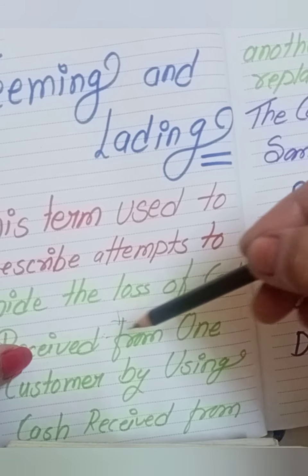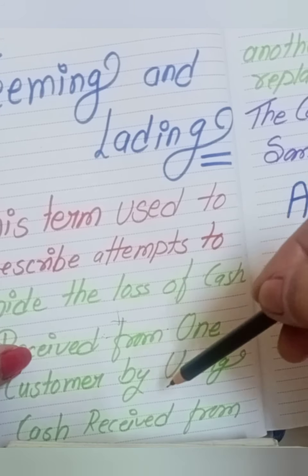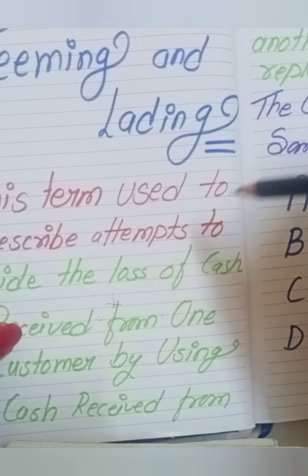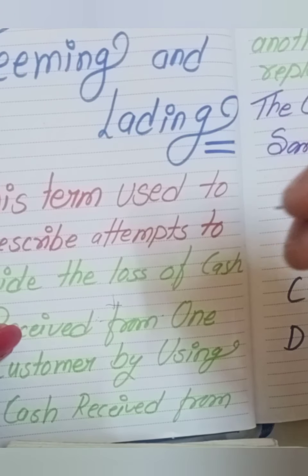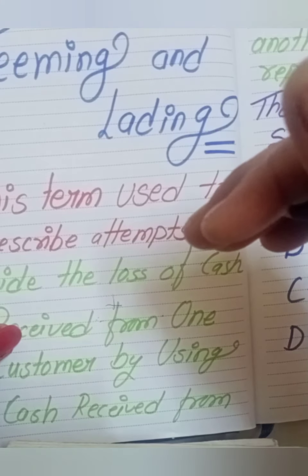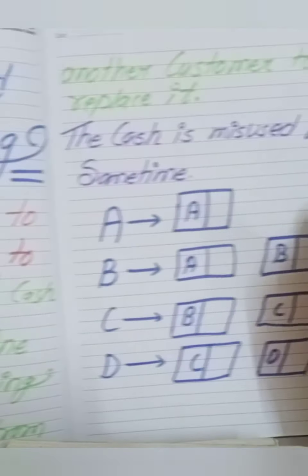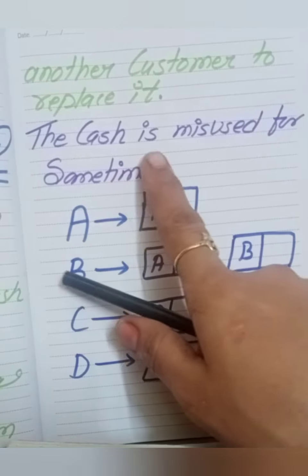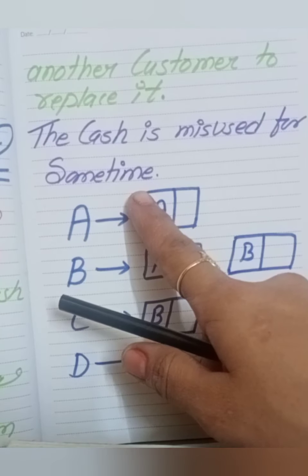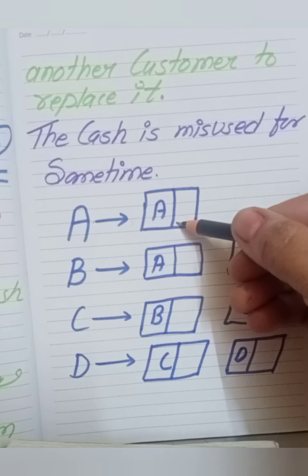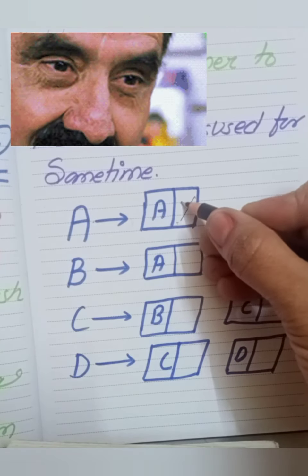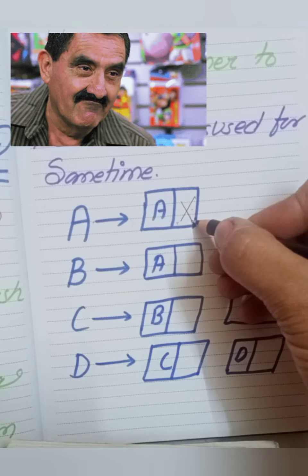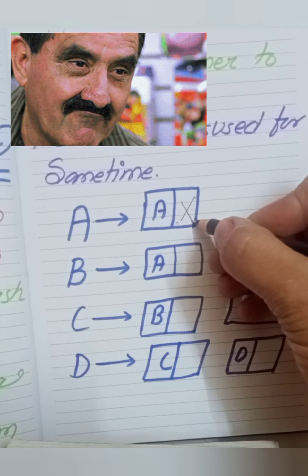When there is another customer, then I will use that to replace it. This is called teeming and lading for detecting the error and fraud. Let's see the example. The cash is misused for some time. What happens here is the money that has been received from customer A, I have not recorded that cash received, I have misappropriated it.